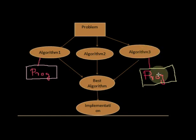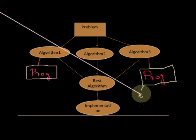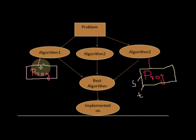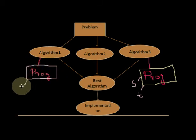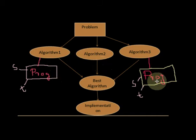Suppose algorithm 1 is implemented into a program and fed to the machine to run. While running on the machine, the program will consume two factors: one is the time, and the other is the space. Similarly, algorithm 2 is implemented into a program and fed to the machine, and it also consumes both time and memory space.